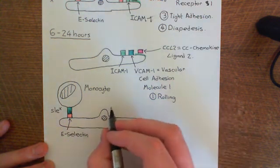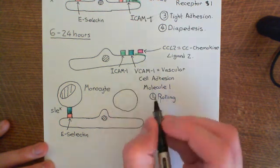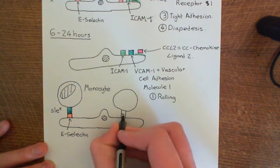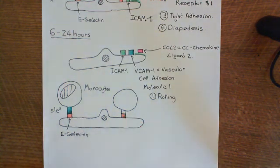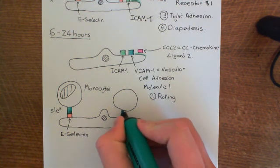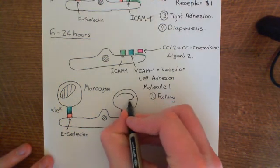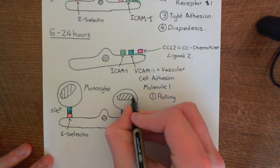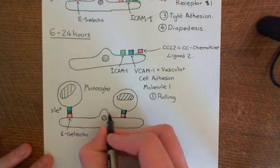The monocyte eventually comes to a halt, at which point there is now a permanent interaction between sialyl-lewis-X and E-selectin molecules on the endothelial cell surface. What follows is weak adhesion, involving again interactions between sialyl-lewis-X molecules on the endothelial cell and sialyl-lewis-X molecules on the monocyte surface.